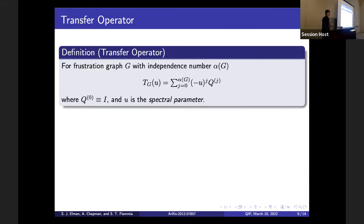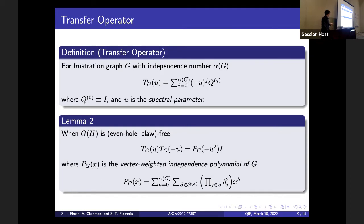The next ingredient we need is the transfer operator. Think of it as an operator-valued independence polynomial: it is the sum of independent set charges Q_j weighted by a spectral parameter u raised to the power j, with Q_0 being the identity as a constant term. When the frustration graph is even-hole claw-free, these transfer operators satisfy an inverse relationship — they multiply to the vertex-weighted independence polynomial of the original frustration graph, which is just a scalar: the sum over all independent sets with coefficients given by the product of the squared Hamiltonian coefficients.